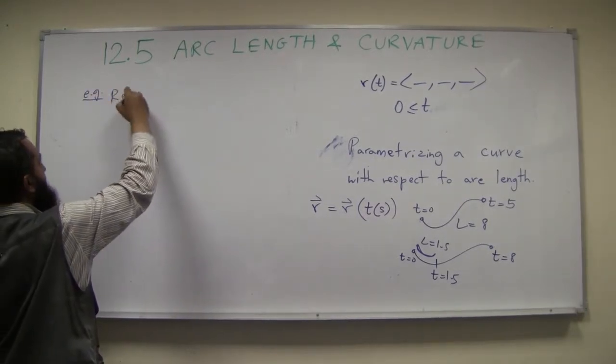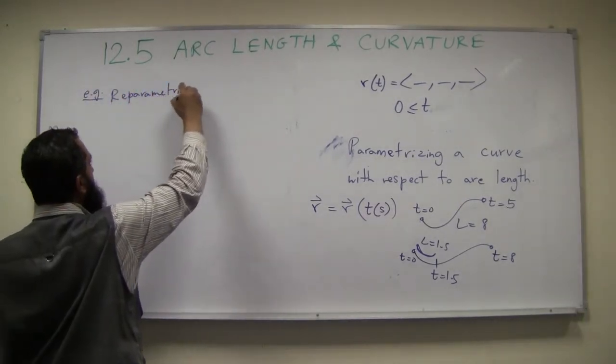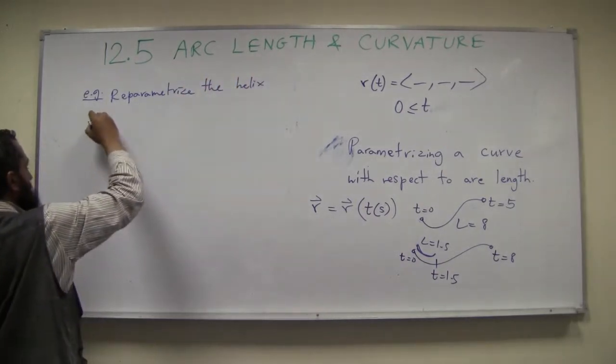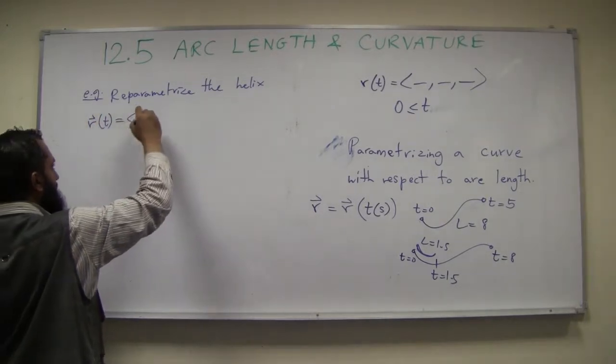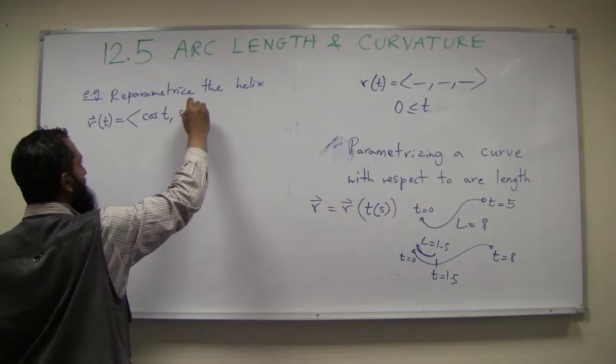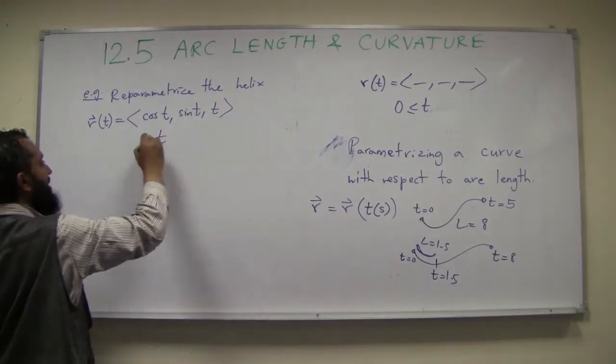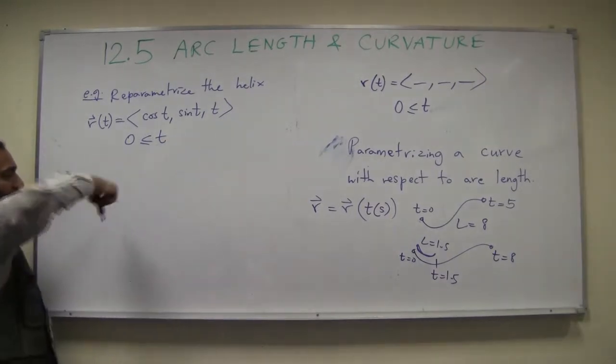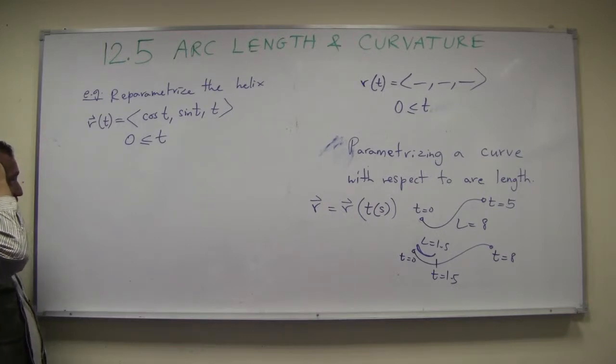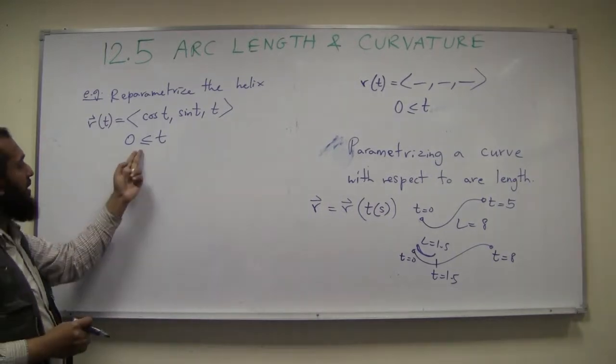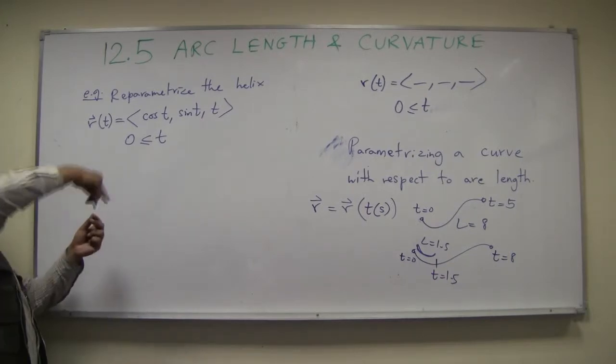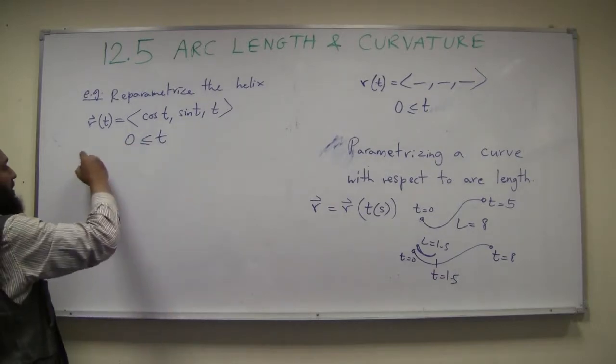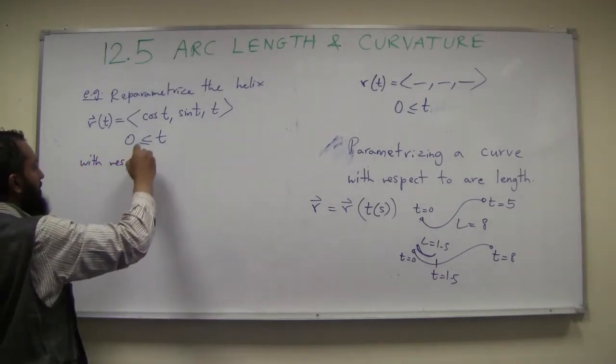Example, reparameterize the helix, r(t) equals <cos t, sin t, t>, the same helix that we've used in the last example. So, let's say this helix is being traced out, okay. It's starting at 0 and this helix. Now, if I don't specify upper limit, it just keeps going up. I could do it for a finite piece of curve, or I could do it for infinite piece of curve. I'm just going to do it for the whole thing. Just starting at 0, it just keeps making curves up and up and up. So, reparameterize the helix with respect to arc length.